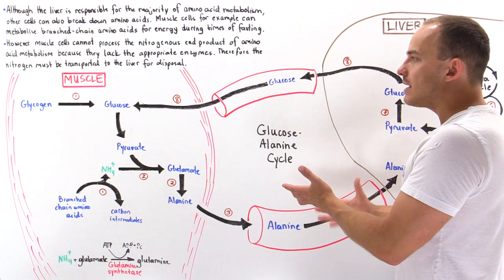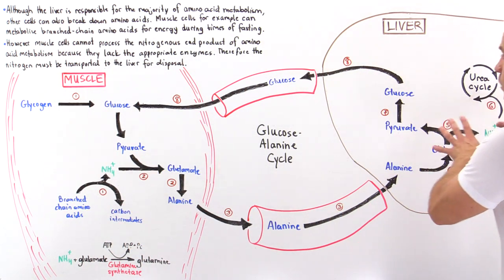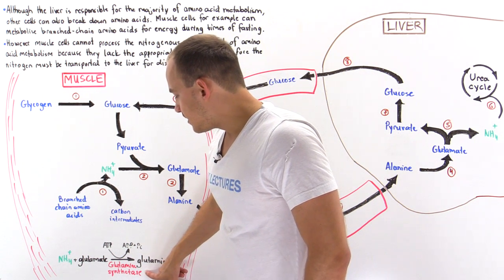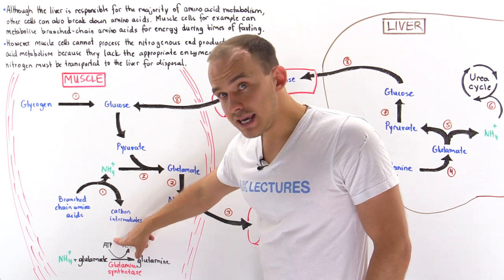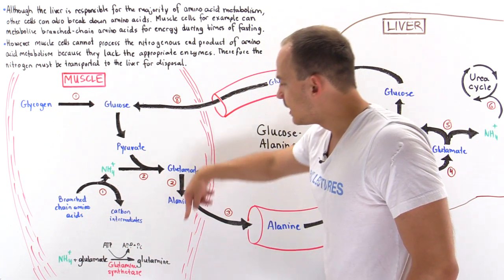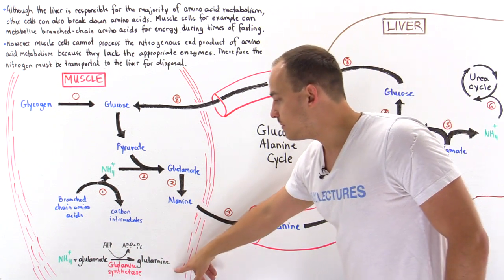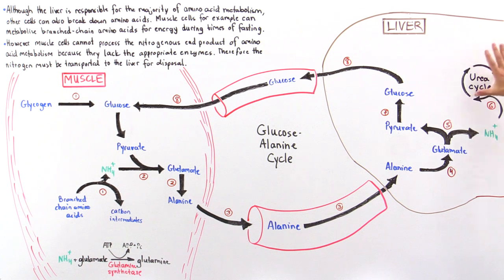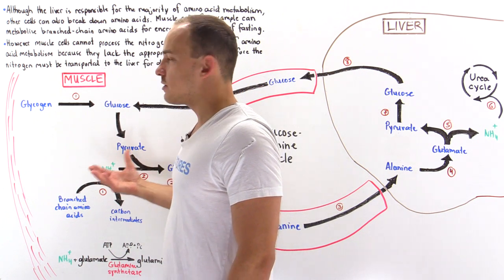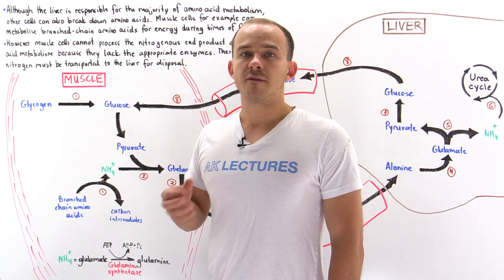The glucose-alanine cycle is one pathway by which we can transport ammonium from our skeletal muscle tissue to our liver. But there is another method, which utilizes an enzyme known as glutamine synthetase. Glutamine synthetase is an ATP-driven enzyme that uses ATP to attach the ammonium formed in the muscle onto glutamate to form glutamine. Just like alanine, glutamine can move into the bloodstream, travel into the hepatocytes, and then be broken down into glutamate, releasing ammonium, which is then fed into the urea cycle in the same way. These are the two pathways by which ammonium formed inside skeletal muscle tissue can be transported to the liver for disposal.